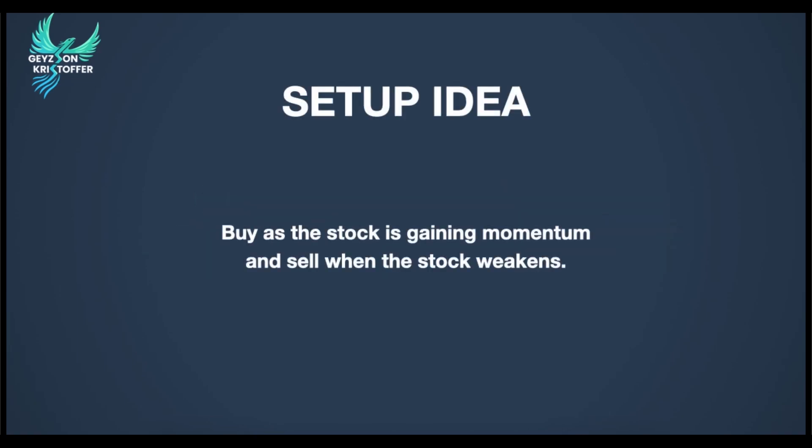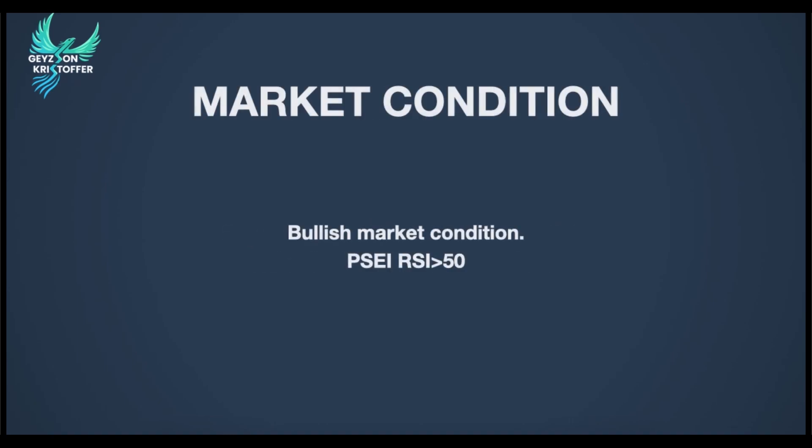Setup Idea. My momentum algorithm anchors to the idea that we buy as the stock is gaining momentum and then we sell as the stock hits a resistance or is weakening. The setup is best traded in a bullish market condition and should be traded less often in bearish market conditions. A gauge to know if the market is bullish is if its RSI is greater than 50.